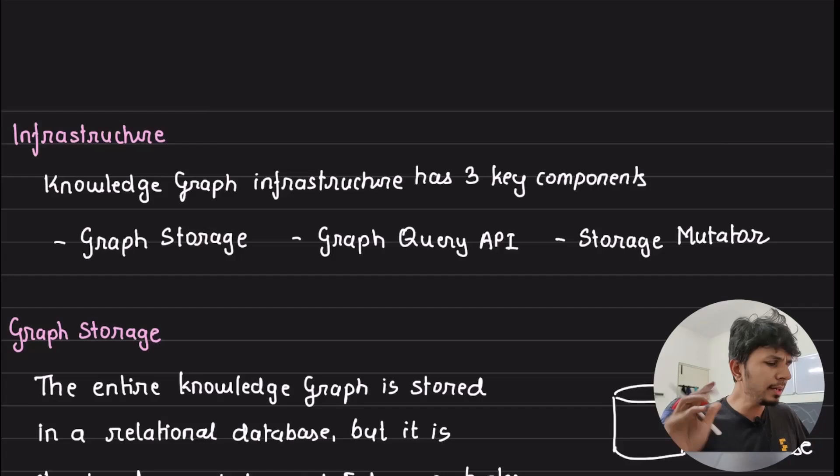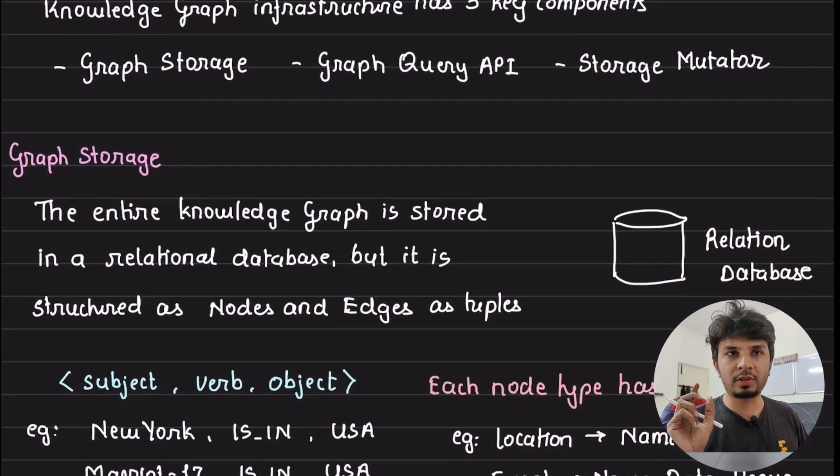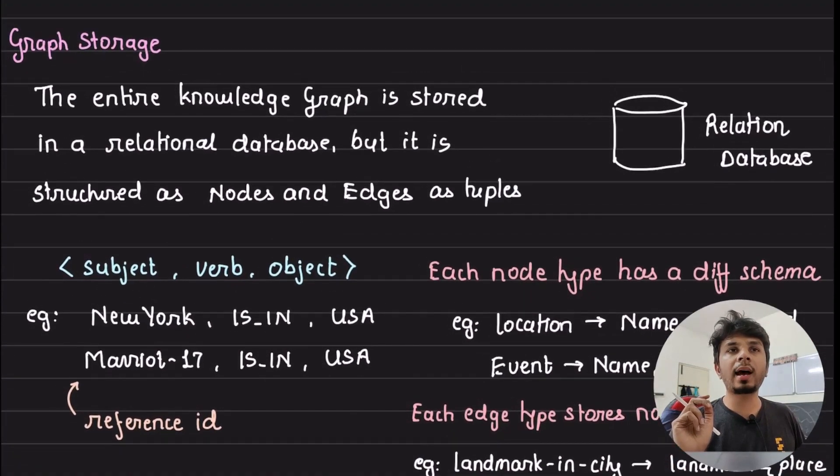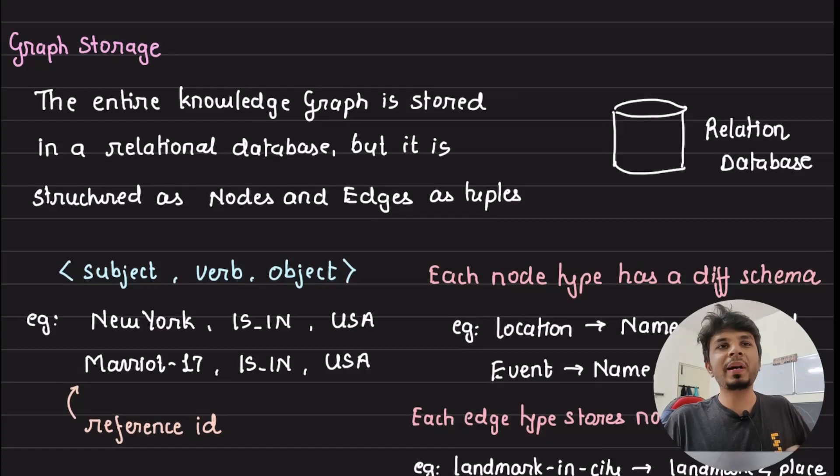And then a storage mutator so that this information can be updated by some peripheral services, right? We'll start with the first one: graph storage. So how is graph stored? You might think, hey, graph needs to be stored, let me just use a graph database.